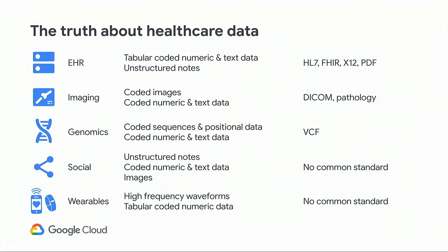Genomics data in healthcare and life sciences — we think about bringing all these different types and modalities of data together. We look for different variants and bring in variant data in VCF files directly into BigQuery. That all works, and we have an API for that.